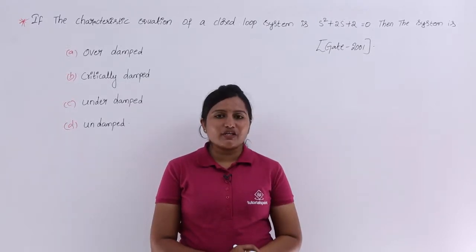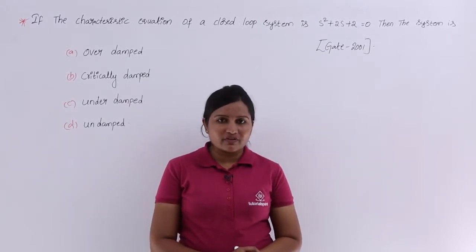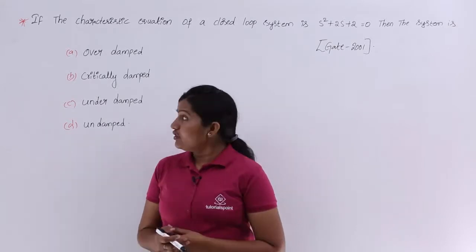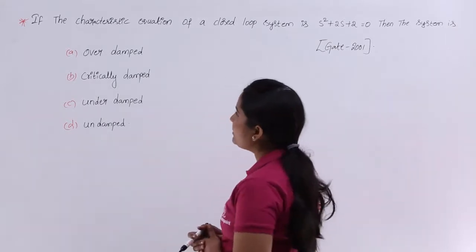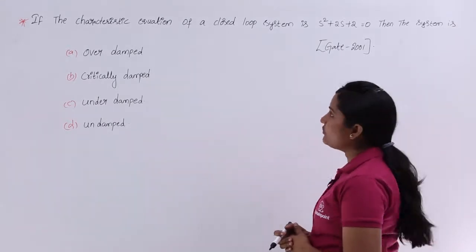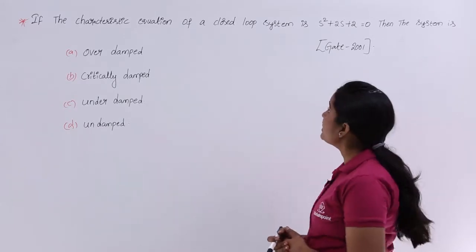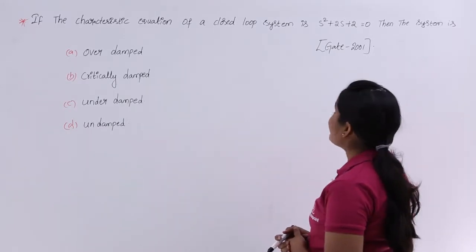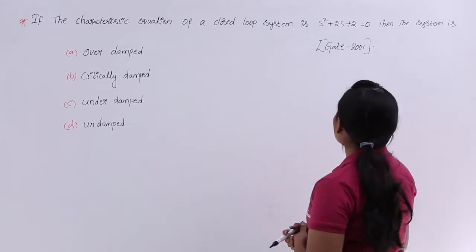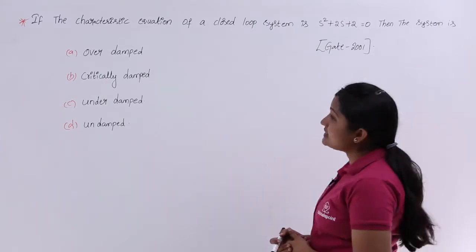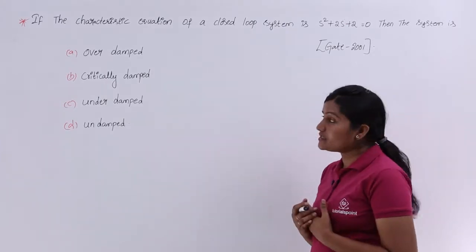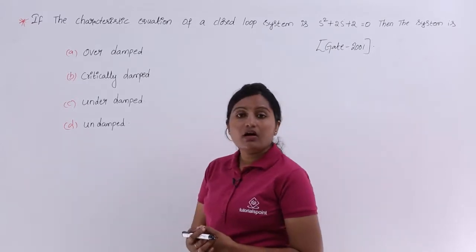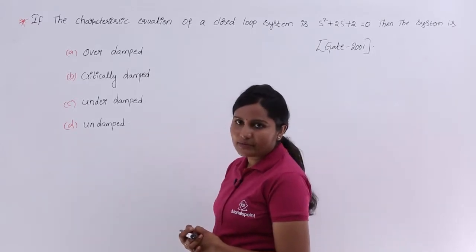In this video we are going to solve a previous GATE problem related to damping of the system. You can see the problem here: if the characteristic equation of a closed loop system is S² + 2S + 2 = 0, then the system is an over-damped system, critically damped system, under-damped system, or undamped system.